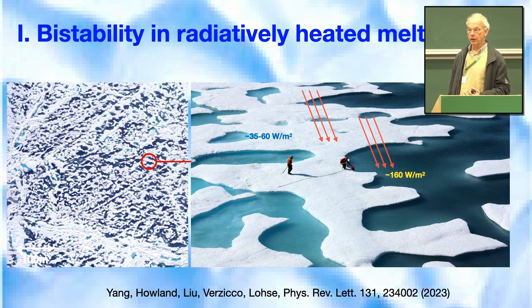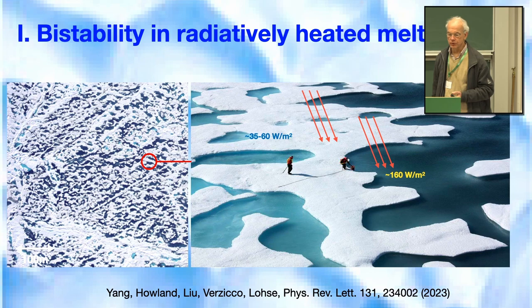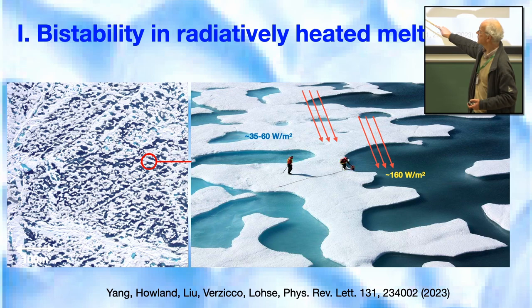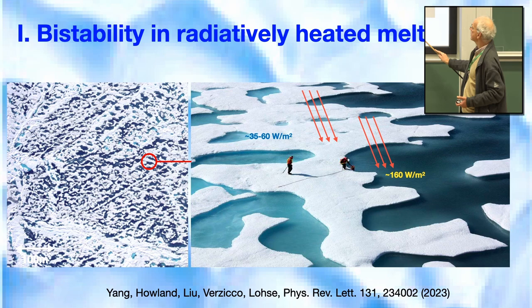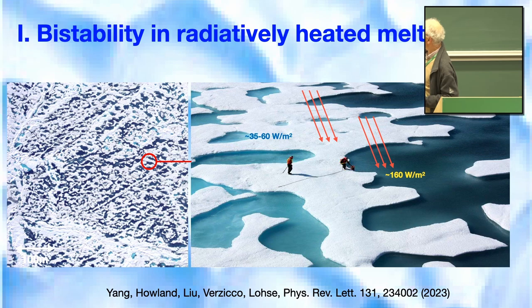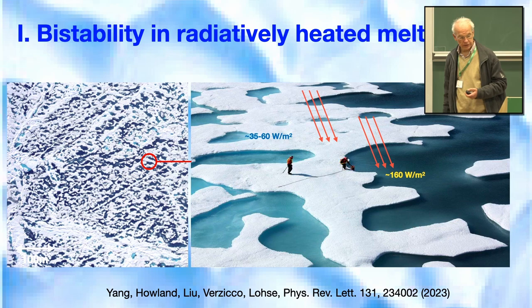I'll show three problems briefly before focusing on layering. The first problem is bistability in radiatively heated melt ponds. These melt ponds appear on Arctic sea ice, changing the albedo. In Antarctic summer they are unavoidable — the solar intensity is typically 160 watts per square meter. The mechanism: you melt the upper layer, creating a density inversion where water directly above the ice at zero degrees is lighter than water above it at 3-4 degrees, driving a convection roll that eats into the ice.